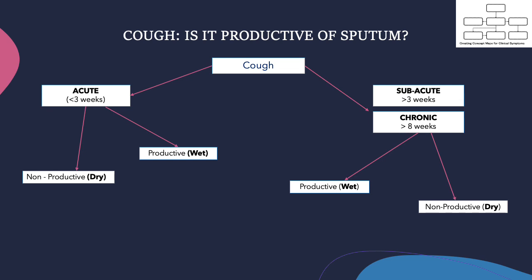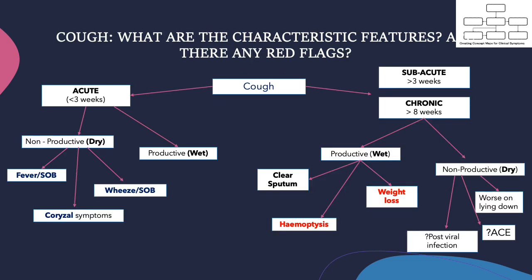Wet cough will often point to infection, obstructive lung diseases such as bronchiectasis, COPD, or fluid overload. Then you need to think about the characteristic features and whether there are any red flags. It is important to rule out red flags such as malignancy, TB, and vasculitis. Haemoptysis with constitutional symptoms such as night sweats, weight loss, fatigue, and fevers should get you thinking about TB. Other associated features such as fever, shortness of breath, wheeze, and coryza symptoms should get you thinking about other conditions as well, which we will explore in the next slide.